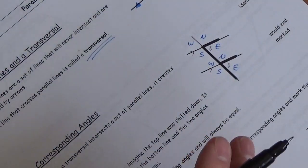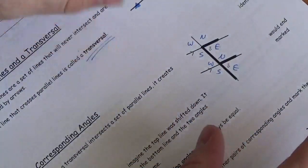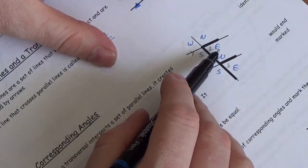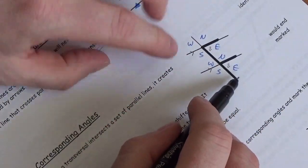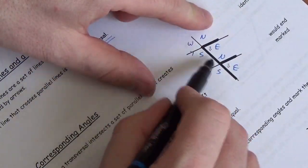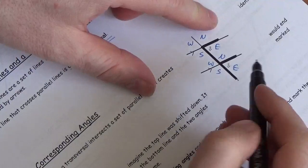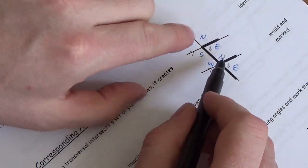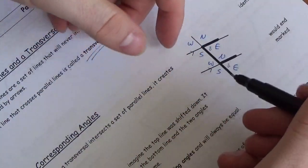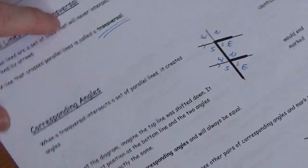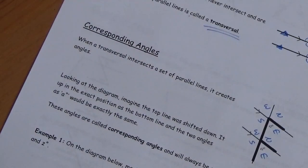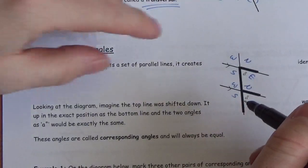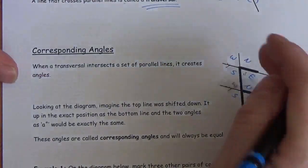Corresponding angles are angles that are in the same basic direction as each other based on the vertex. For example, the east angle at one intersection and the east angle at the other are both pointing the same direction relative to the point of intersection. So those two angles are equal — the two north angles are equal, the two west angles are equal, and so are the south angles.